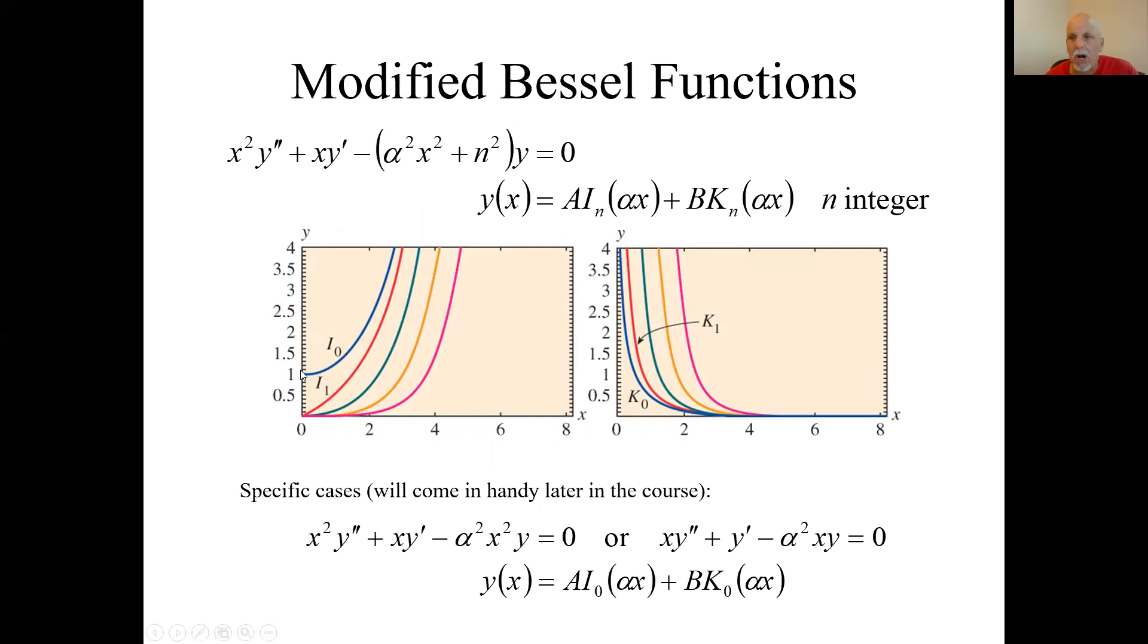There's also a modified Bessel equation. You'll notice the sign difference. We're only going to be interested in nu equals integers here. And actually, I believe the only case that will come up for us later is when nu equals 0. But here's the general solution to the modified Bessel equation when nu is an integer. Instead of J and Y, we use I and K for the modified Bessel functions of the first and second kind.